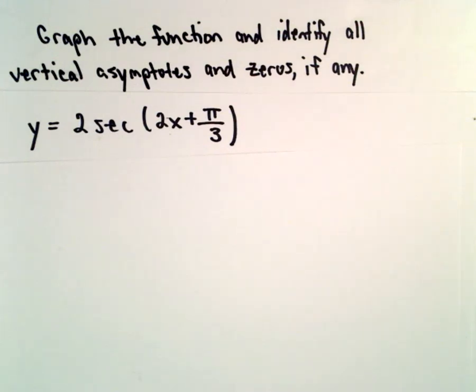Okay, in this example, I'm going to graph the function y equals 2 times secant of 2x plus pi over 3. We'll graph one period of that, and then we'll also pick out the vertical asymptotes and zeros, if any.